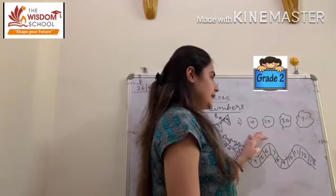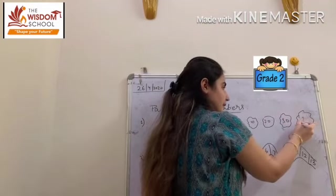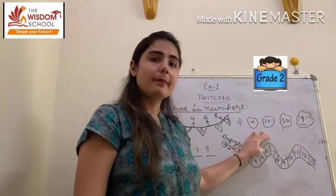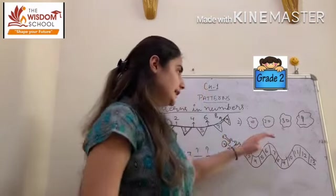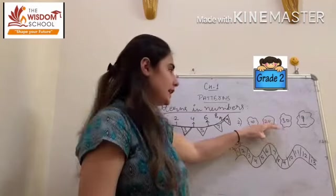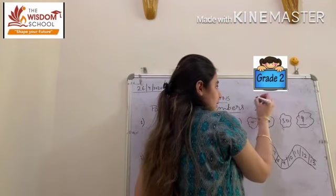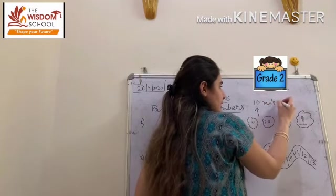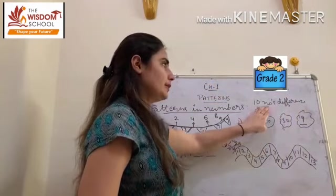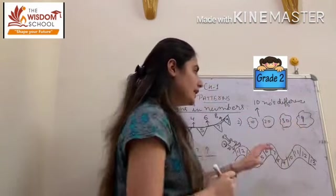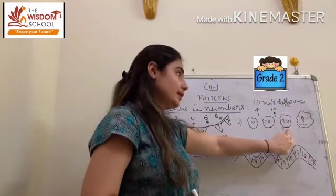Next example: students, you can see here I have written 10, 20, 30, and then we have to find out what will come next. So children, first we will observe what kind of pattern is forming here. You can see there is a difference of 10 numbers between each pair.